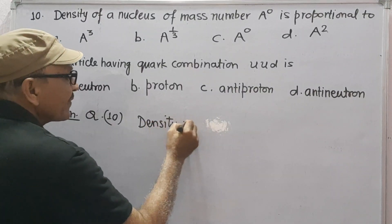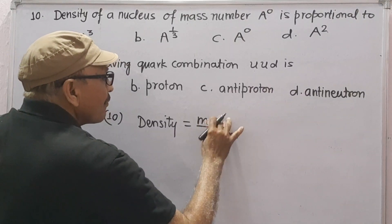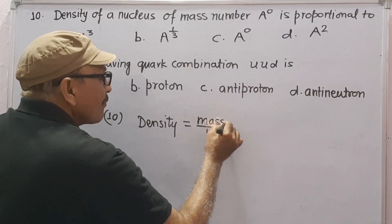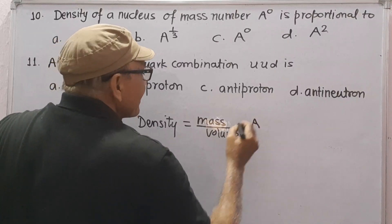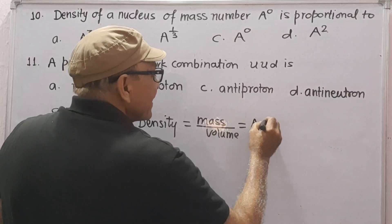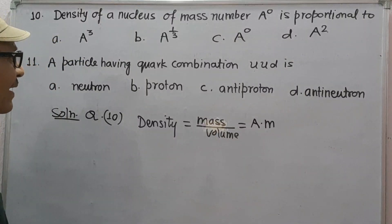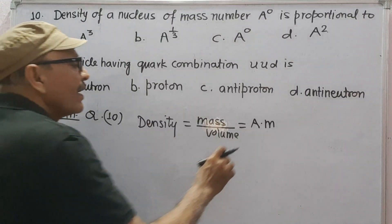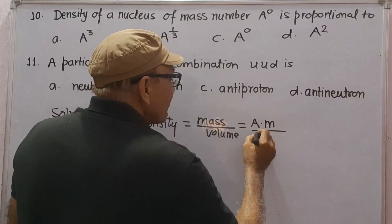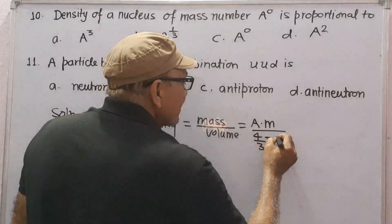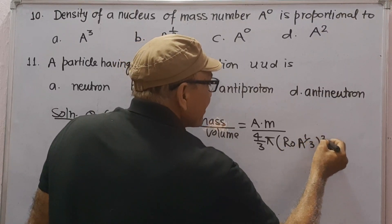Density of nucleus will be mass upon volume. Mass of nucleus upon volume of nucleus. If A is mass number and small m is the mass of nucleon, then we have A neutrons and protons each. Then volume will be 4 by 3 pi R cube, where R is R naught A to power 1 by 3 cube.